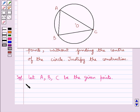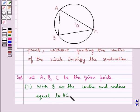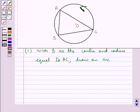First of all, with B as the center and radius equal to AC, we draw an arc. So we have drawn this arc taking B as the center and radius equal to the measure of AC.